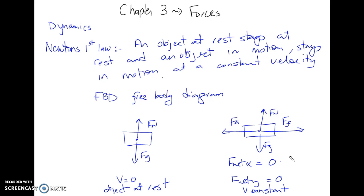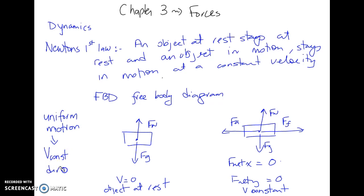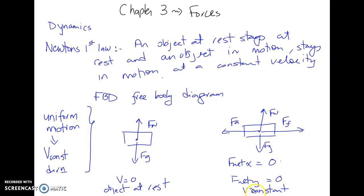The way we know if an object is not accelerating is when they use the word 'uniform motion.' Uniform motion means the object has a velocity that is constant and a direction that is constant. If the velocity is constant but direction is changing, that would not be uniform motion. So when you see 'uniform motion' or 'velocity is constant,' that's Newton's first law.